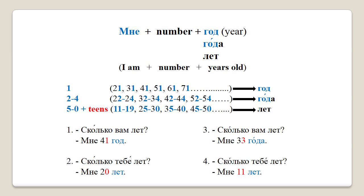Сколько вам лет? Мне сорок один год. How old are you? I'm 41 years old. Сколько тебе лет? Мне двадцать лет. How old are you? I'm twenty years old. Сколько вам лет? Мне тридцать три года. How old are you? I'm 33 years old. Сколько тебе лет? Мне одиннадцать лет. How old are you? I'm eleven years old.